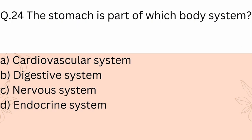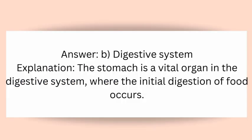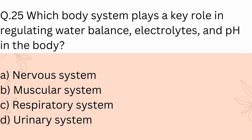Question 24: The stomach is part of which body system? A) Cardiovascular system, B) Digestive system, C) Nervous system, D) Endocrine system. Answer: B) Digestive system. Explanation: The stomach is a vital organ in the digestive system where the initial digestion of food occurs.